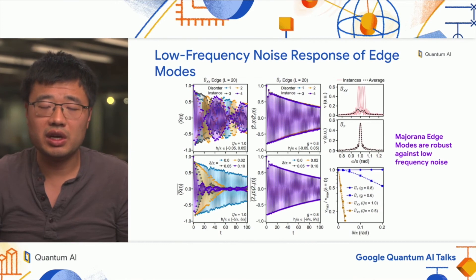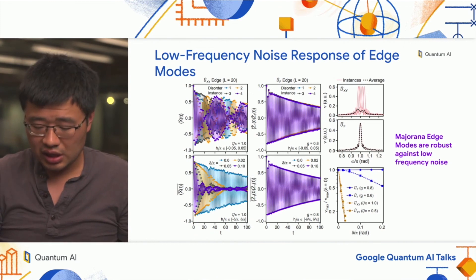After disorder averaging, you see the response of each edge mode is dramatically different. For the XY edge mode, any perturbation or tiny changes in the local field creates beating in the response and is sensitively dependent on the specifics of the disorder. If you average them out and crank up the disorder strength delta, everything decays out very quickly. Whereas for the Majorana edge modes, they're pretty much insensitive to whatever disorder pattern I put into the system, and they do not change upon disorder averaging.